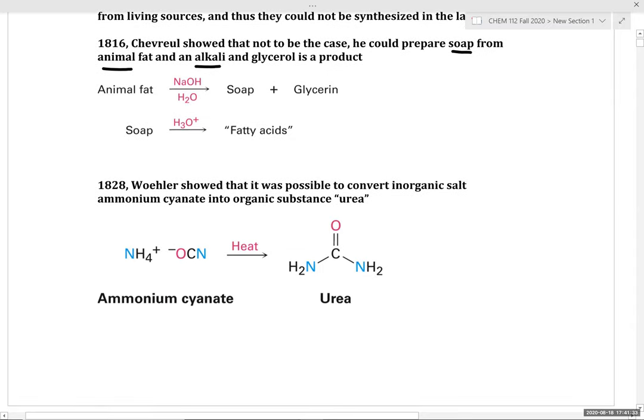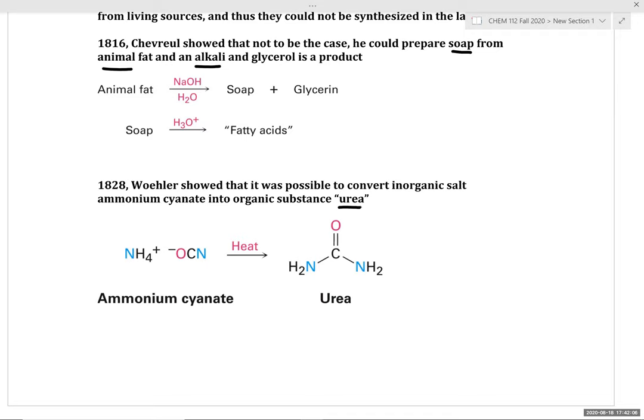In 1828, Wöhler showed that it's possible to convert an inorganic salt, ammonium cyanate, into the organic substance urea. This really opened the door towards further investigations into methods to prepare, synthesize, isolate, and characterize organic compounds. A flurry of investigation went into methods and reactions to convert starting materials into desired organic products.